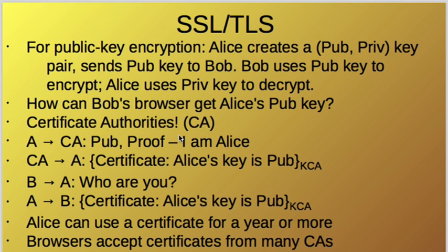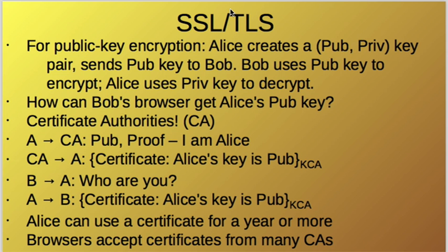Let's take a quick look at how SSL/TLS works using public key encryption. We use the names Alice and Bob — person A and person B — where one can be a client like a browser and the other a server. Alice creates a key pair with a public key and a private key. These two keys form a key pair.